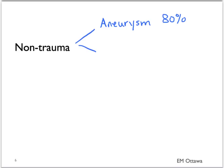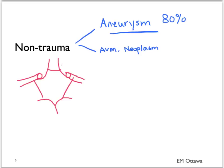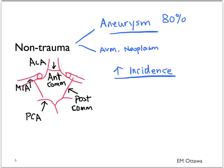For non-traumatic causes of subarachnoid hemorrhage, most will be due to rupture of an aneurysm. Minor causes include ruptured AVM and neoplasms, so we will focus on aneurysmal subarachnoid hemorrhage. Aneurysms are most often found in the circle of Willis, formed by the anterior cerebral arteries, middle cerebral arteries, posterior cerebral arteries, and the communicating arteries. The incidence of aneurysms increases with family history, and associated diseases include polycystic kidney disease and connective tissue diseases such as Marfan's and Ehlers-Danlos syndrome.